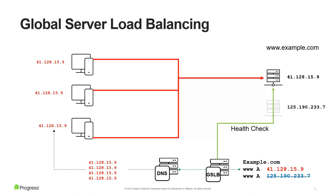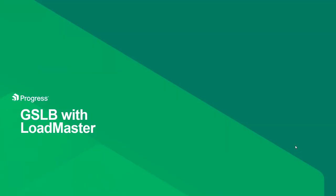Traditional DNS would just step you through however many IP addresses it has for that www delegation. So with GSLB we have health checks, so you're not sending people to an IP address that's down, and we have persistence so you're not jumping one person around multiple servers. Looking at this in the context of Load Master, GEO is our product name for Load Master global server load balancing — we refer to it as Load Master GEO.